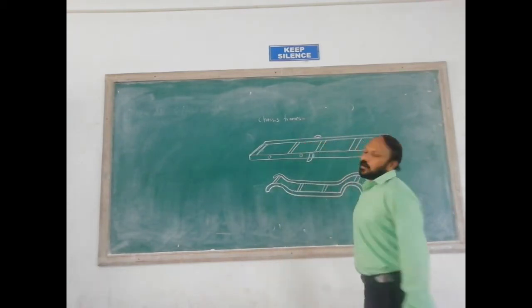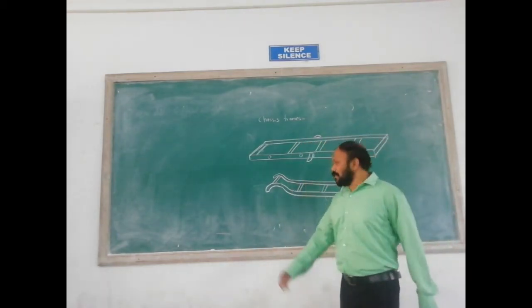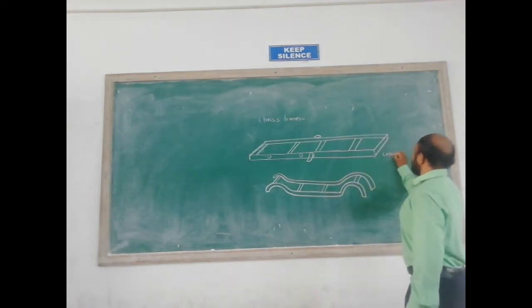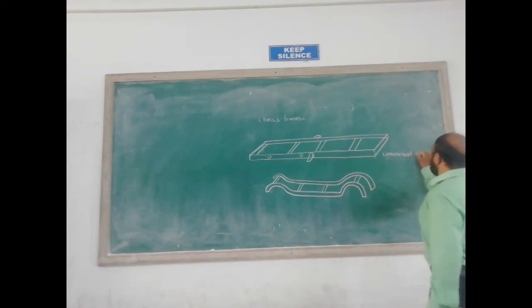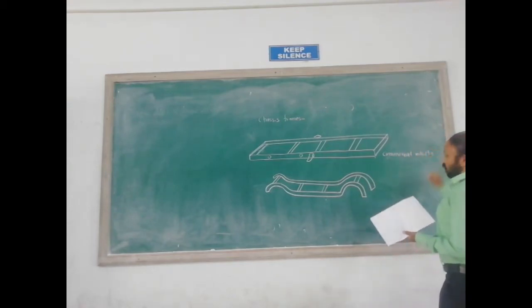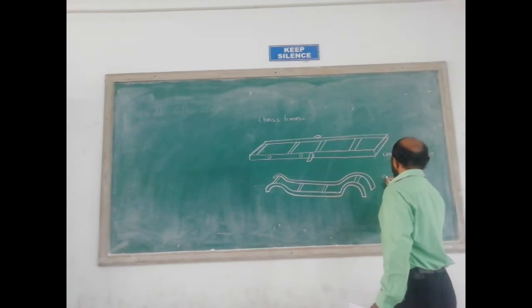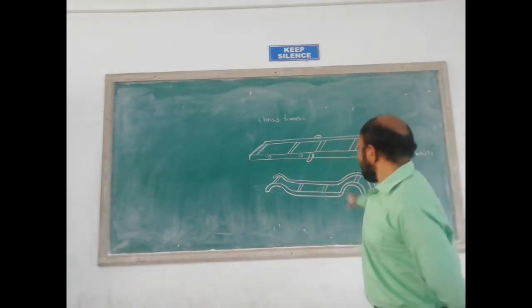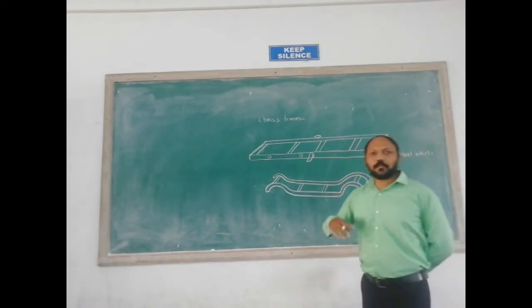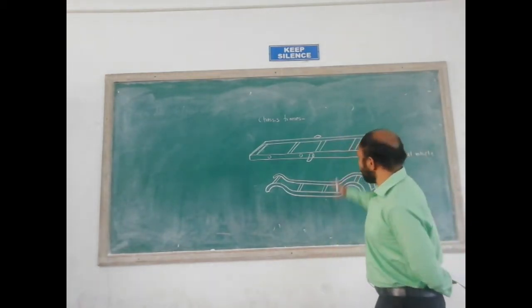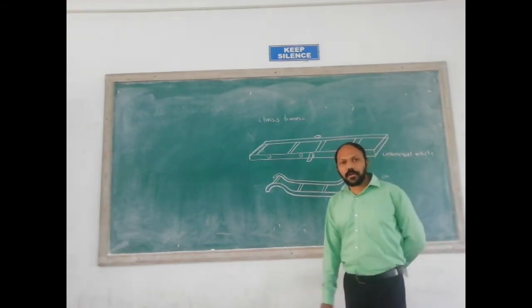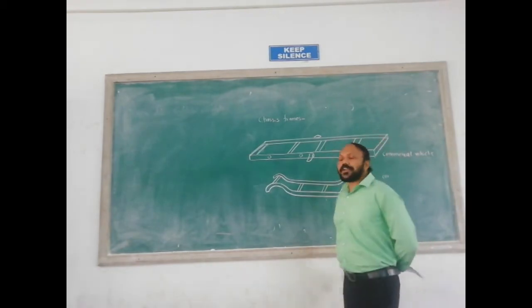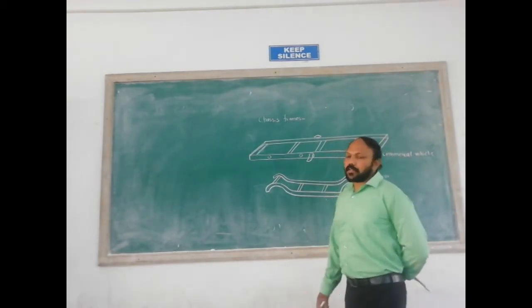This is related to the car and this is related to the commercial vehicle. Why this difference is there? Because in the car the space is very less as compared to the commercial vehicle or truck, and so as the space is maximum, the straight frame is preferred in that case.